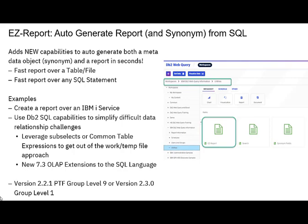You can do this either over a table, a file, or any SQL statement. Examples include creating a report over an IBM i service. These are part of the operating system that have been delivered over time to enable an SQL interface to get access to systems, metrics, and utilization information that was previously only available through CL commands or APIs. The IBM i services are all based on SQL, which makes it very easy to generate reports using them.